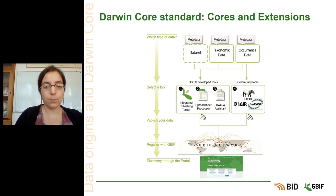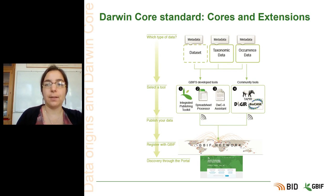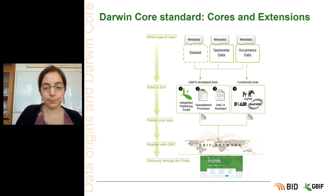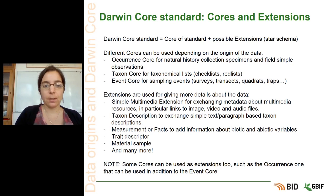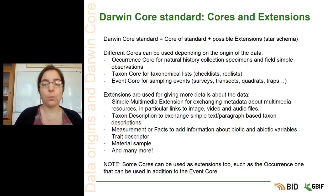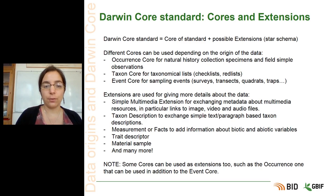Once you have published your data using the IPT, your data will be available online on the GBIF data website, as shown at the bottom of this slide. To publish different types of data with different origins, we use the Darwin Core Standard with what we call cores and extensions. The Darwin Core Standard is comprised of a core and possible extensions that form a star schema.